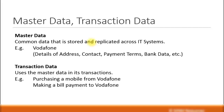Then you have the transactional data. Transaction data, just like its description, uses the master data in its transactions. For example, when you buy a phone from Vodafone, it becomes a transaction — it's purchasing an item. When you make a monthly payment, that's another transaction. So all these are called transactional data, and all these transactions are relevant to a master data, which is Vodafone. So master data is a common data giving all the information of a company, vendor, customer, GL account, an asset — anything. And the transaction data uses the master data in its transactions.